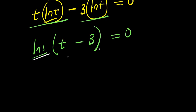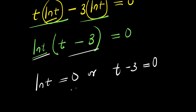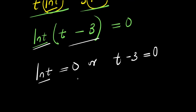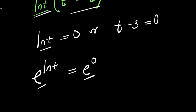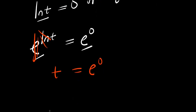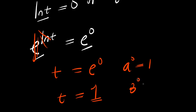Now I can equate each of these to 0. I have natural log of t equals 0, or I have t minus 3 equals 0. If you have natural log of t equals 0, you can easily solve for t. You have e to the power of natural log of t equals e to the power of 0. I'm using e here because I want to eliminate this natural log — e raised to the power of natural log will cancel out, giving us t equals e power 0. So t equals 1, since any number raised to the power of 0 is 1. The only exception to this rule is 0 power 0, which is undefined.